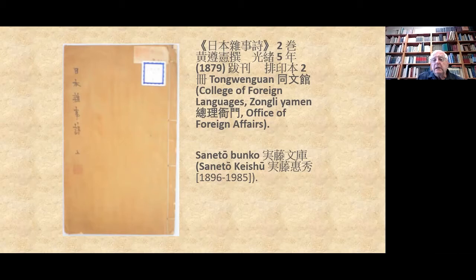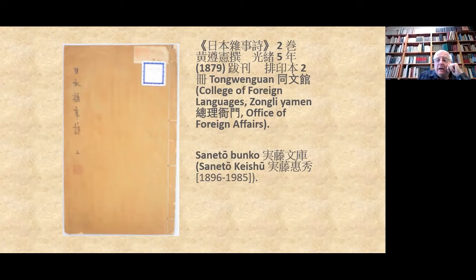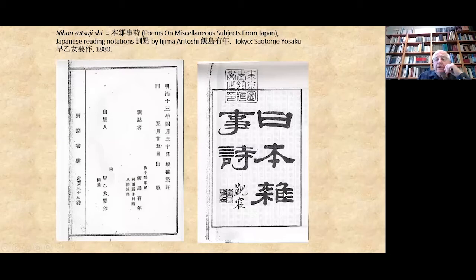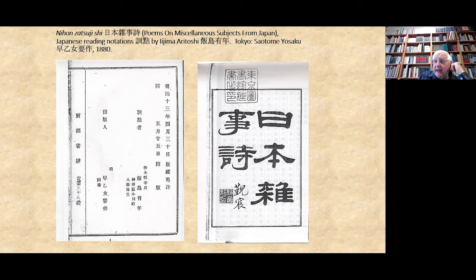Here are the editions. The first edition is 1879, from Seneta Bunko — the Seneta Keishu collection. Professor Seneta is probably the foremost scholar of Chinese-Japanese cultural relations in the 19th and early 20th century; he died in 1985 and had no immediate following in Japan, but his works are now being assiduously explored by both Chinese and Japanese scholars. The work was published by the Tongwen Guan, an official publication of the foreign languages Zongli Yamen affairs office.